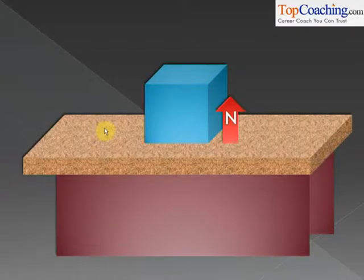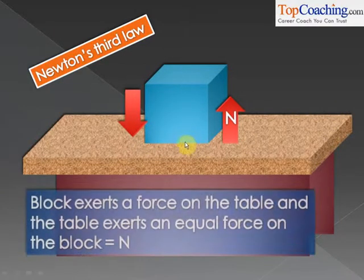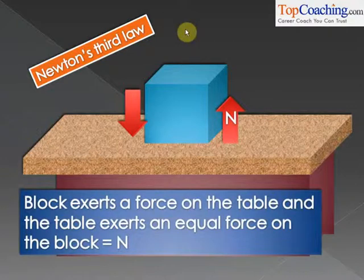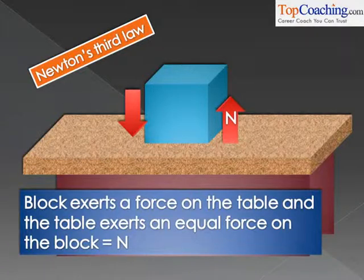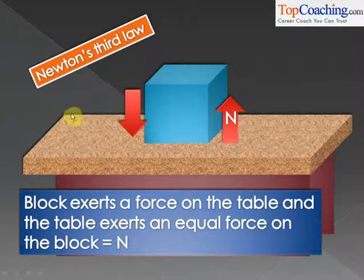The reason for the normal reaction is Newton's Third Law. The block exerts a force on the table — it places its weight on the table — and therefore, as a reaction, the table exerts a force on the block. The force exerted by the block on the table is N, and the force exerted by the table on the block is also N. So basically, when any two bodies are in contact, they exert a force N on each other.